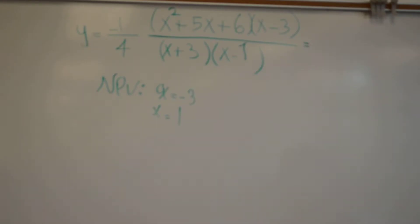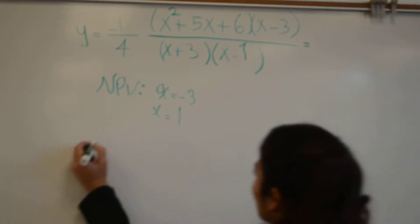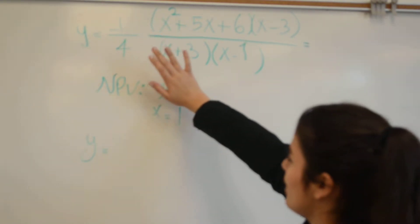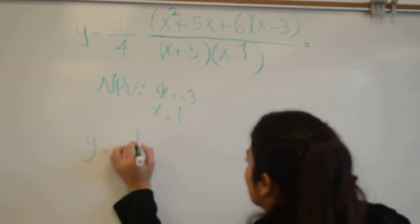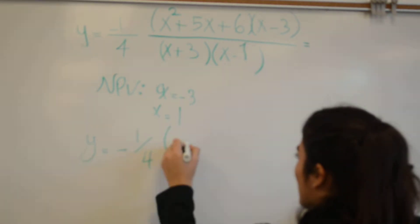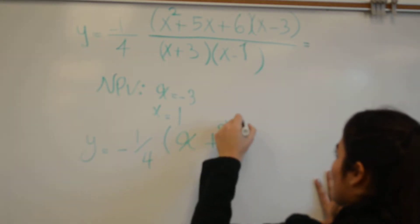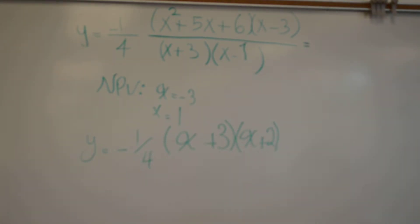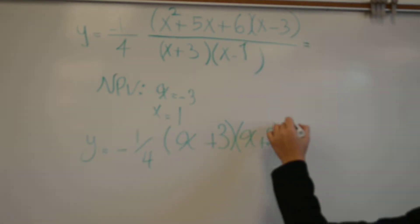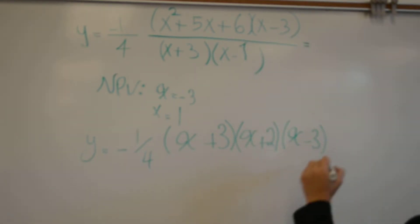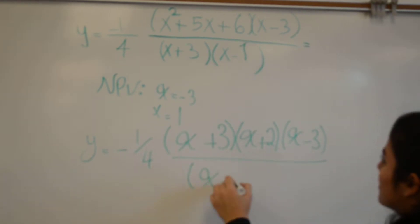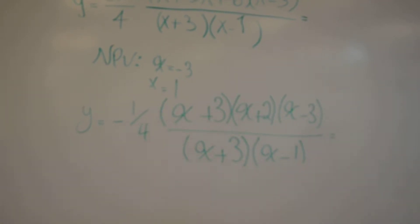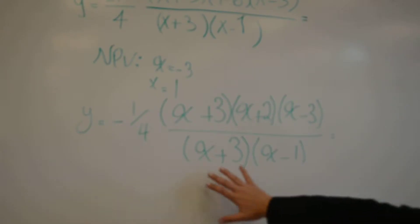The next thing we need to do is factor our numerator. We have an extra number here which is negative 1 over 4, which will not affect any of our asymptotes or holes, so we're just going to leave that for now. So we get x plus 3, x plus 2, and then x minus 3 from our original function, over x plus 3 times x minus 1. We have a common factor between our numerator and our denominator, which is x plus 3.